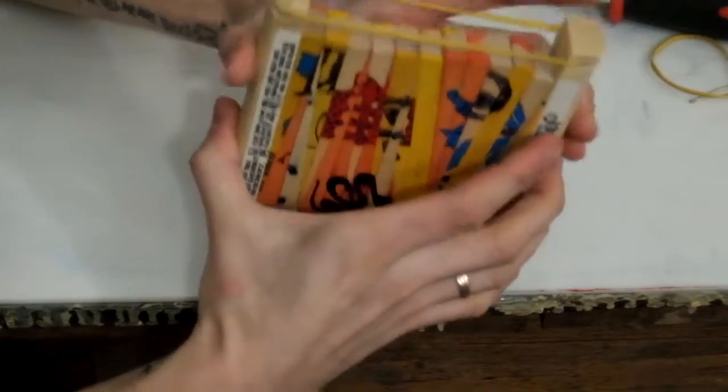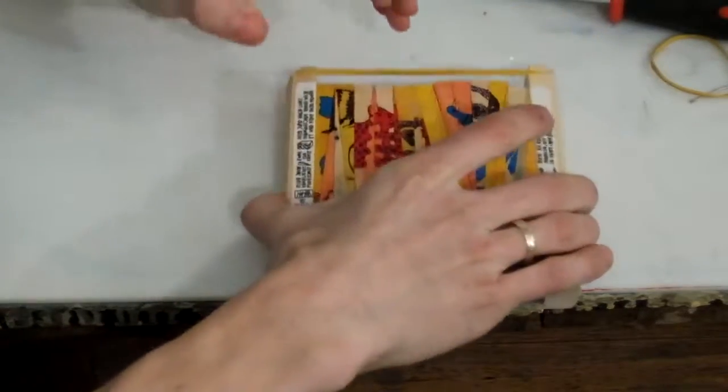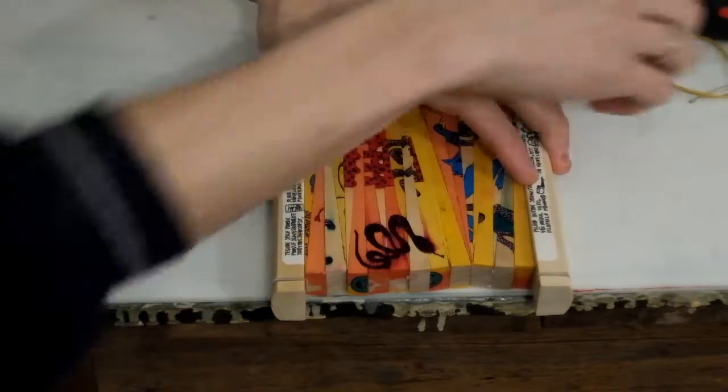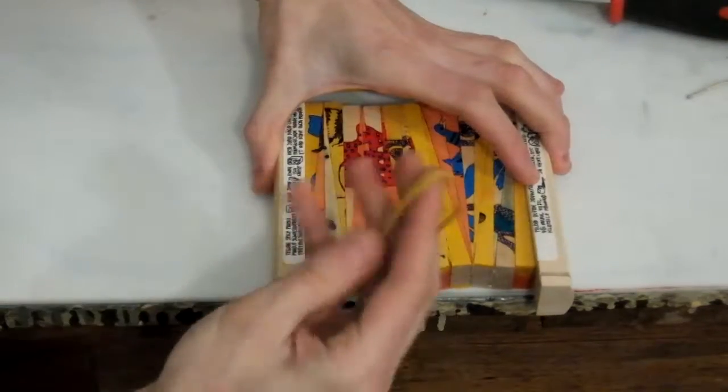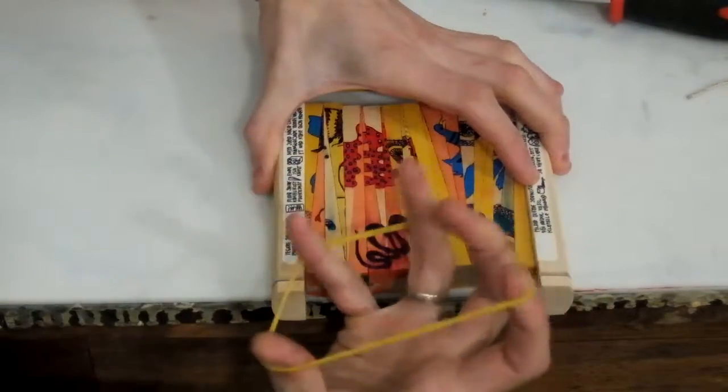Though to get a tight hold we need to bind this rubber double but not yet. Turn it over. Repeat binding as the first side but make it double this time.